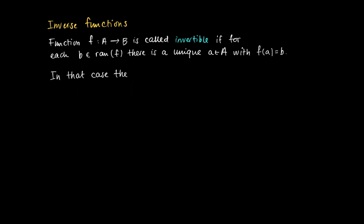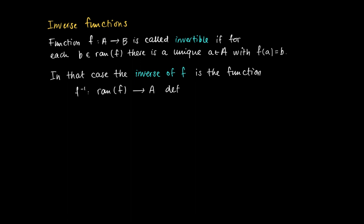In that case I can define the inverse function of F. So if I can associate to each b belonging to the range of F a unique value a such that F(a) = b, then the inverse of F, denoted F⁻¹, is defined on the range of F and maps it back to A, so that when F(a) = b, then F⁻¹(b) = a. So b and a belong together: b is mapped onto a if and only if F(a) = b.